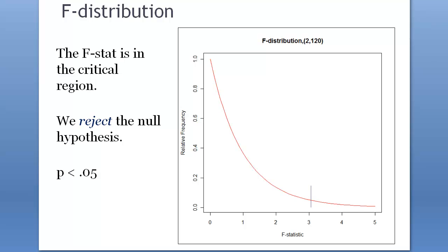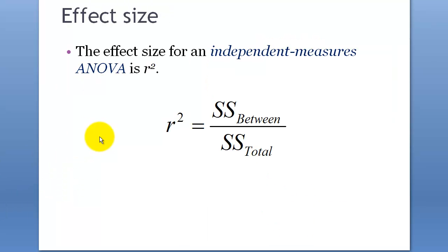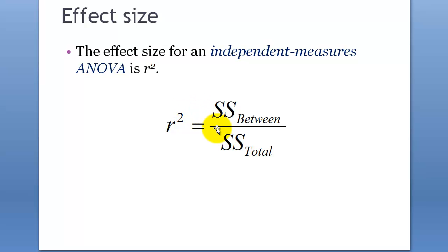We rejected the null hypothesis at P less than 0.05. Now, before going into where the difference was, let's get the effect size. Effect size for independent measures ANOVA is denoted by R-squared. The formula is sum of squares between divided by sum of squares total. It kind of makes sense — sum of squares between divided by sum of squares total.